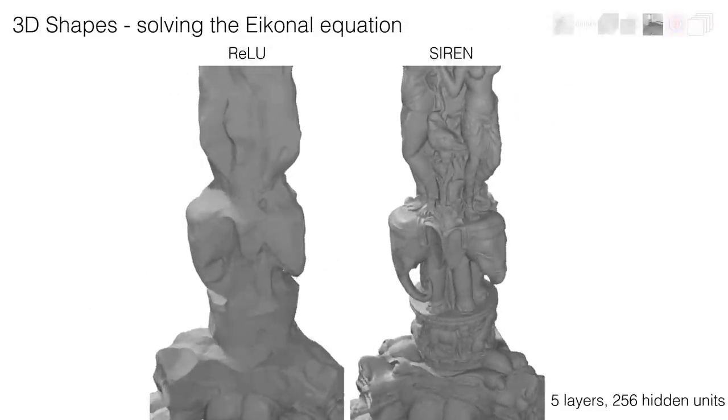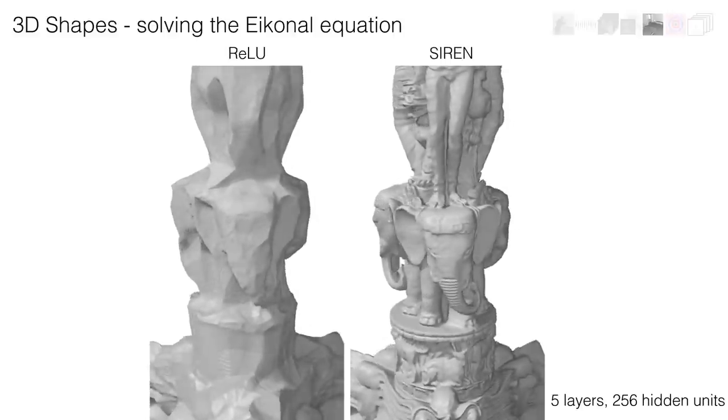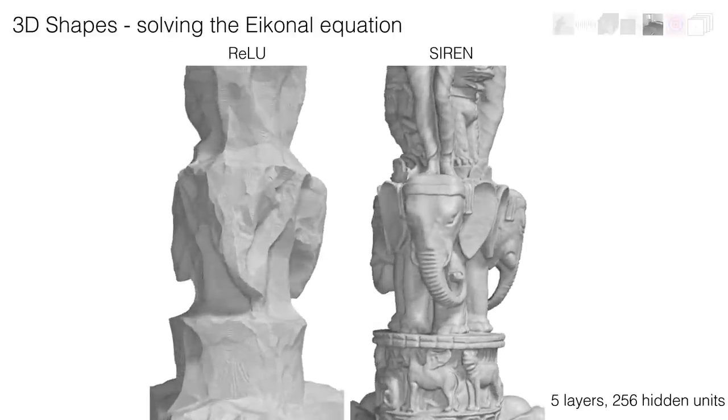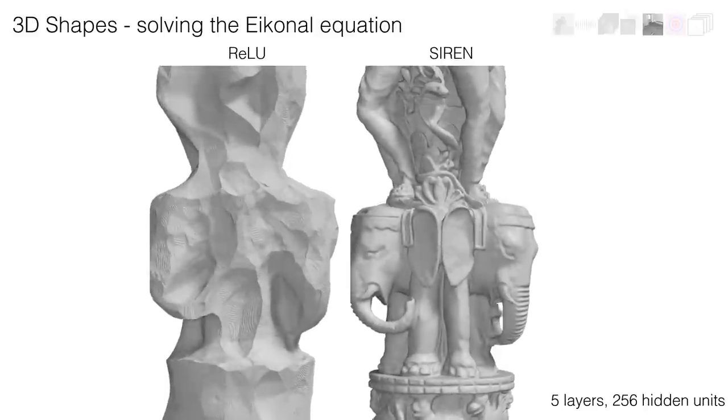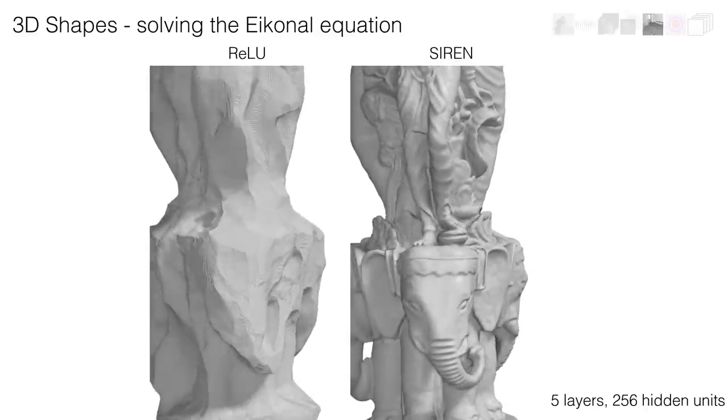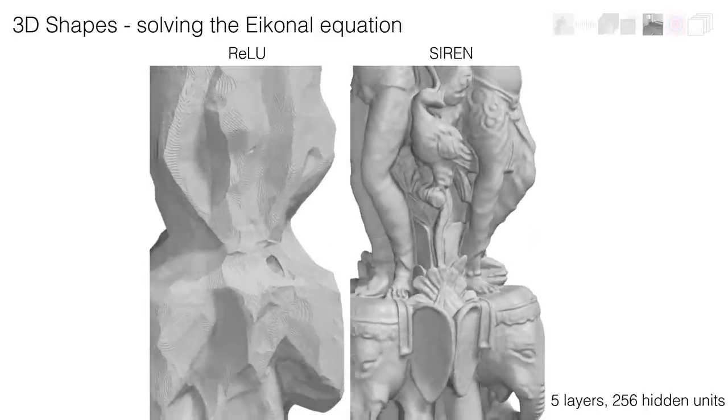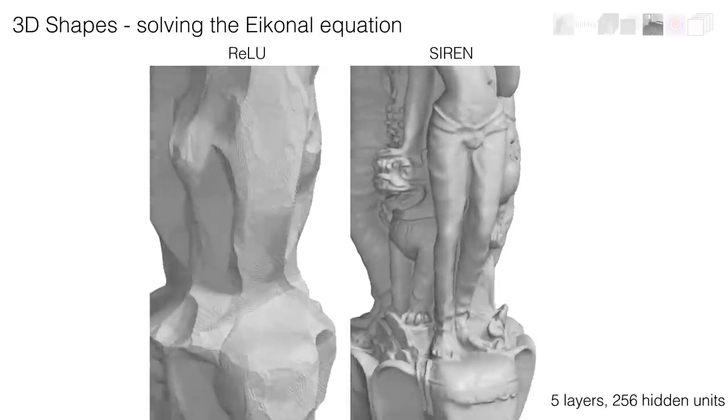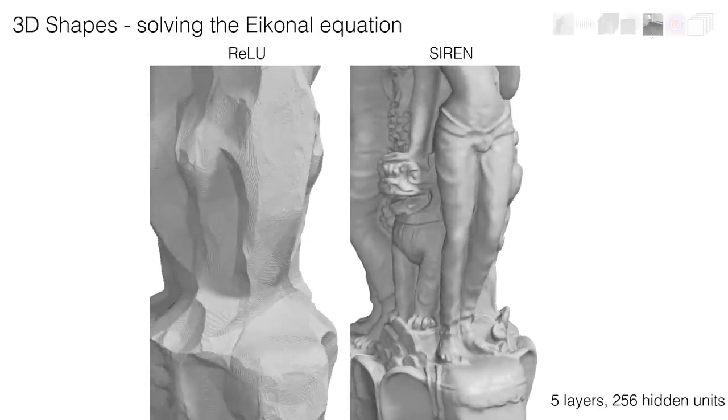By supervising phi on a point cloud with oriented normals, we can thus find a phi whose 0 level set can be extracted and represents a 3D shape. With a relatively small number of parameters, SIREN can represent a level of detail that a ReLU MLP with the same number of parameters cannot, as illustrated on this Thai statue from the Stanford 3D model repository.